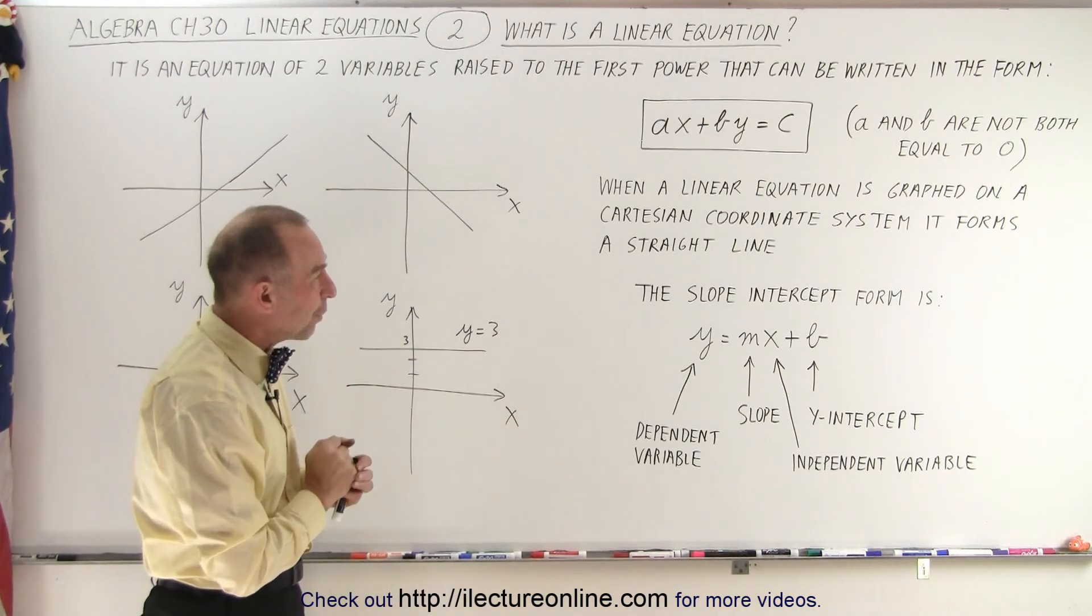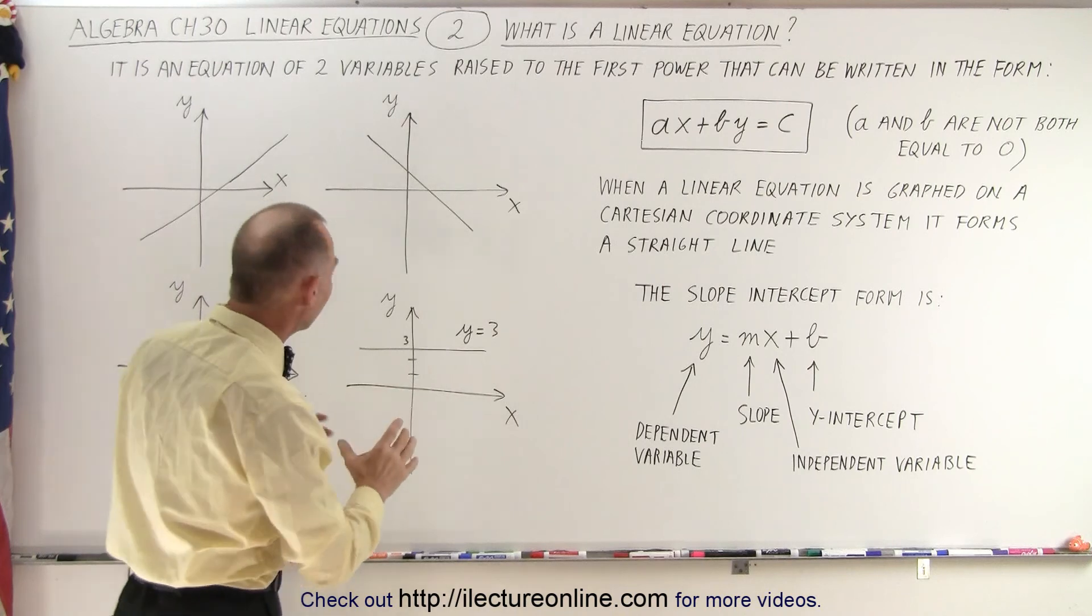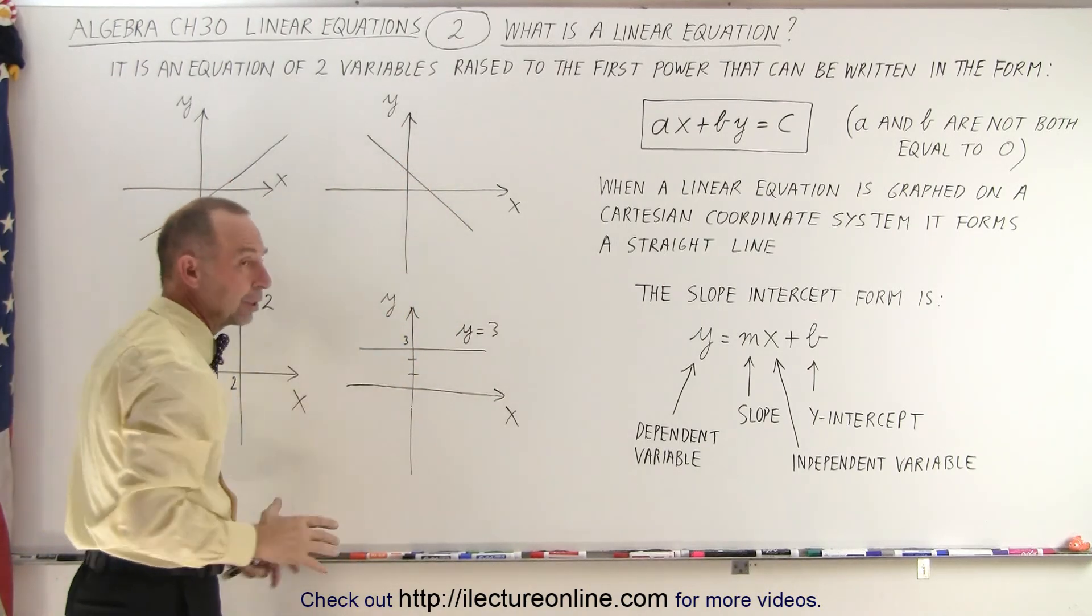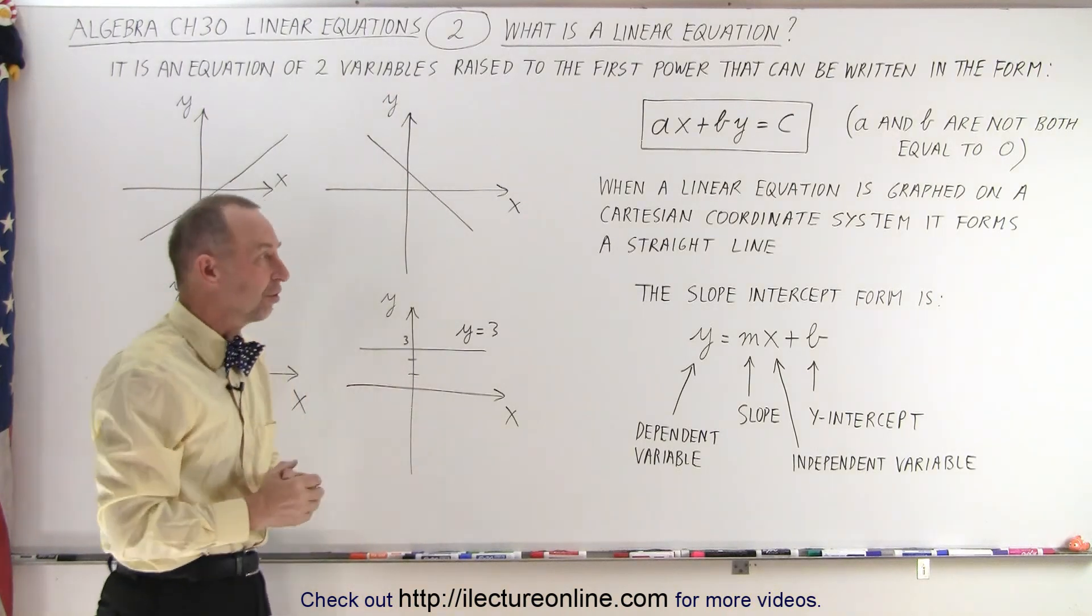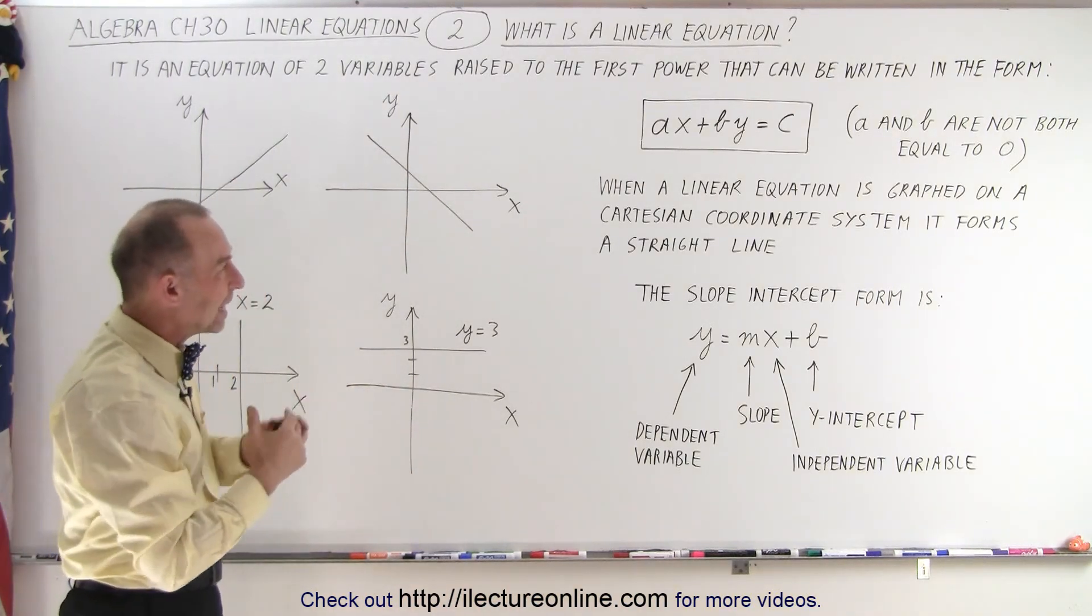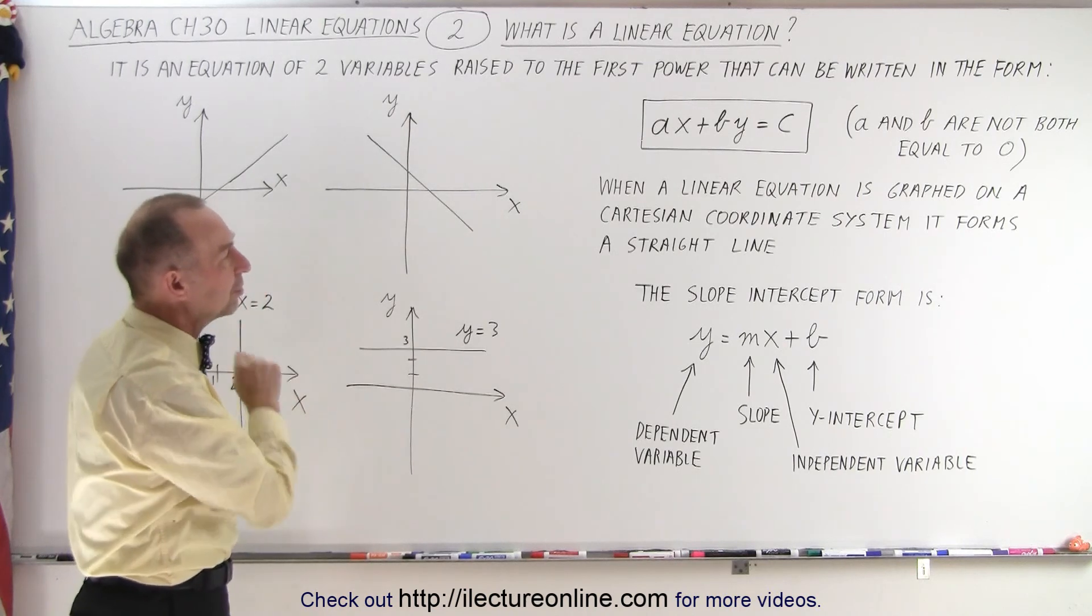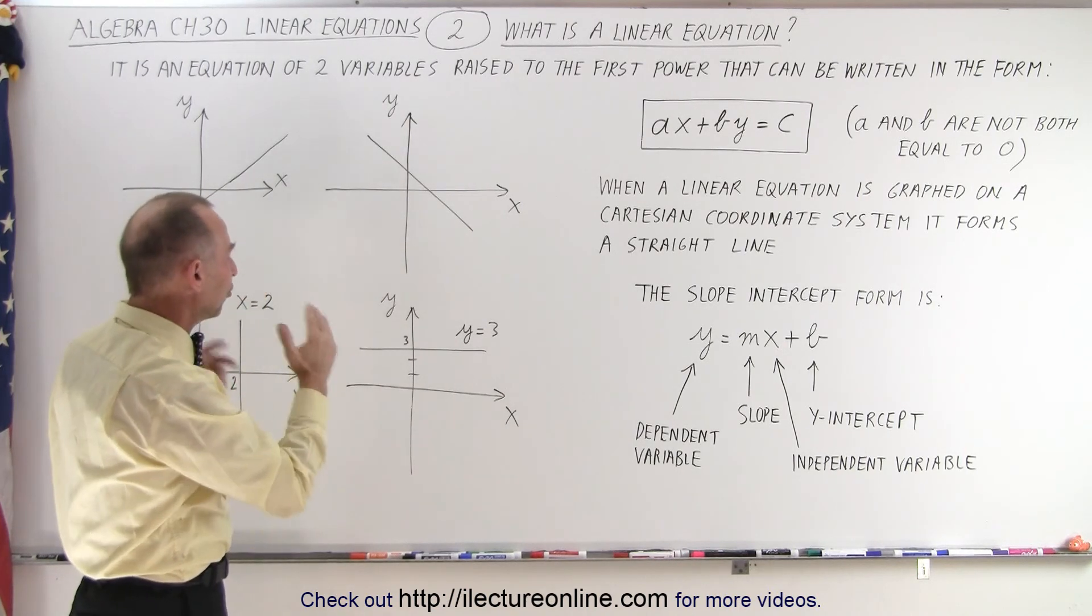When the linear equation is graphed on a Cartesian coordinate system, that's what this is. When we have the x and y axis, we can call that a Cartesian coordinate system. We'll talk about those details a little bit more later. But when we draw a linear equation on a Cartesian coordinate system, it forms a straight line.